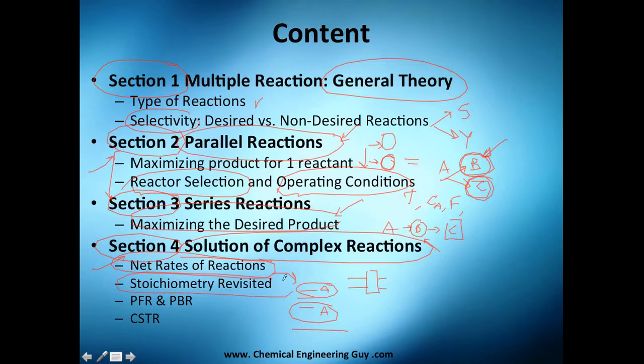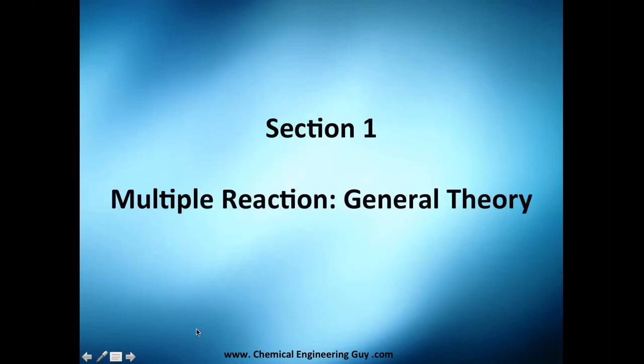We're going to visit a little bit of stoichiometry to see how to model those net rates. And then we apply it to the PFR and PBR, which is plug flow reactor and packed bed reactor. And we finish with the CSTR. Once again, this is very easy compared to these ones, but I prefer to see the hard ones first. So when it comes into the CSTR, you will see that it's actually very easy to do. And that's essentially the overview of the chapter. We're going to start in the next video with section one, which is multiple reaction general theory.